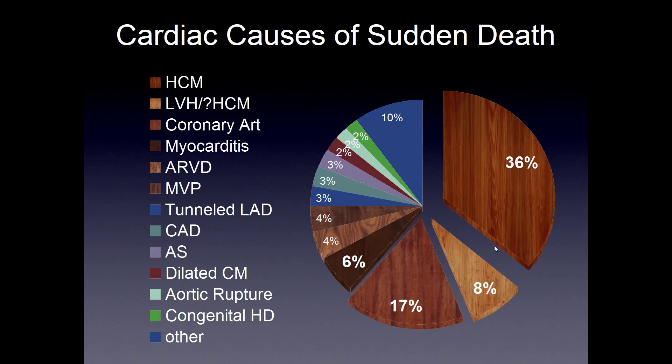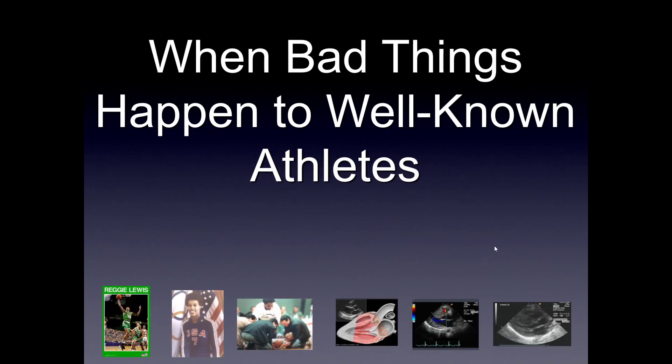This pie chart breaks down the incidence for you with the cardiac causes of sudden death, with hypertrophic cardiomyopathy being the biggest chunk at 36%. You can see the breakdown from there. And as I mentioned, when bad things happen to well-known athletes, it brings a lot more attention to this problem, and because of the media it becomes prevalent in everyone's mind.